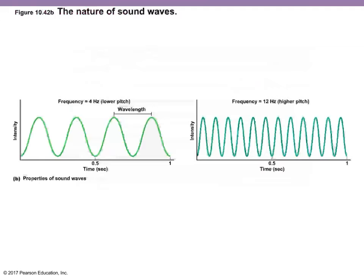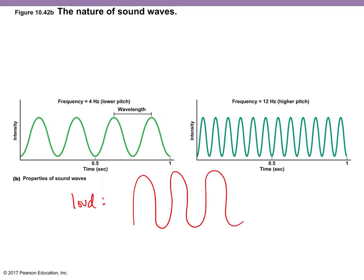Looking at the nature of waves, we have a couple of properties of sound. Loudness — how loud a sound is — is going to be the amplitude of a wave, how high the wave is, and that's measured in decibels. Pitch, or frequency, is going to be measured in hertz. A wavelength is measured from peak to peak or trough to trough. Higher pitches have closer, smaller wavelengths, and a higher amplitude equals louder.